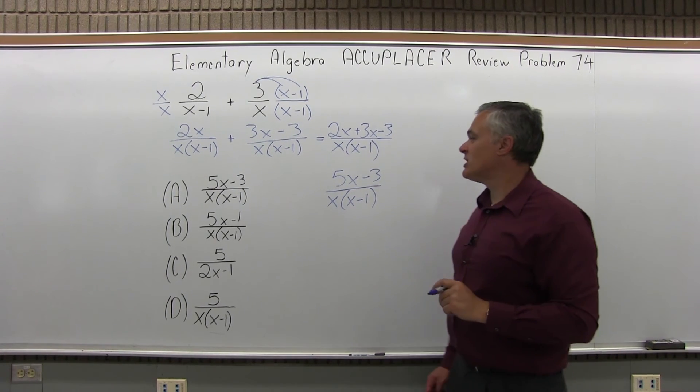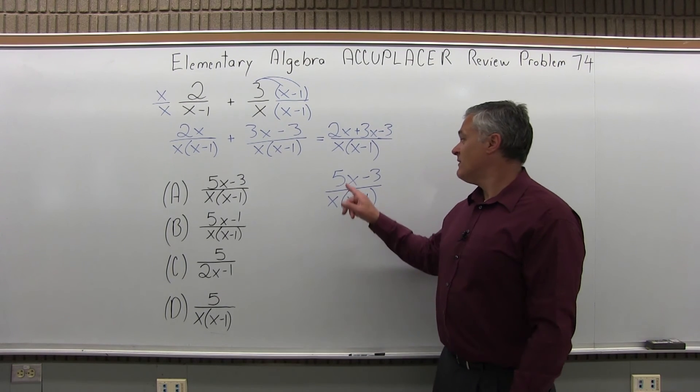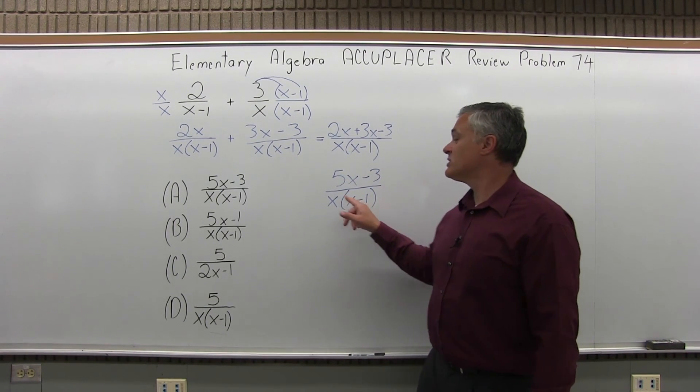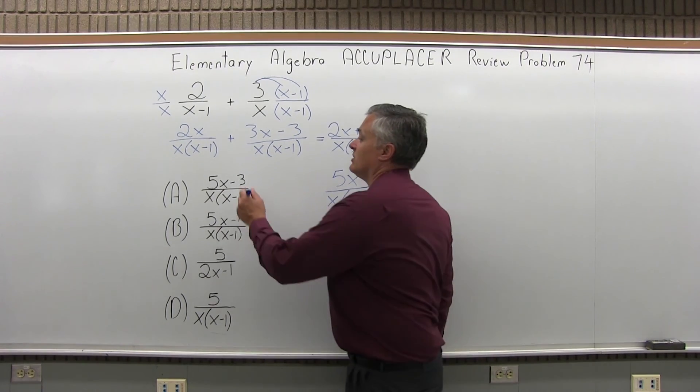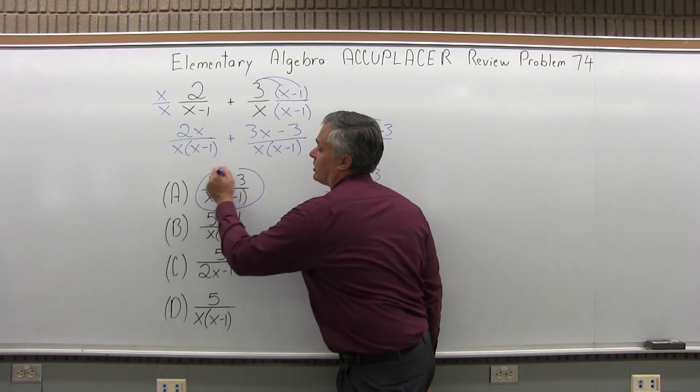Now, does that match any of my options? It does. 5x minus 3 over x times x minus 1 is my answer, and it is also option A. So the answer for this problem is option A.